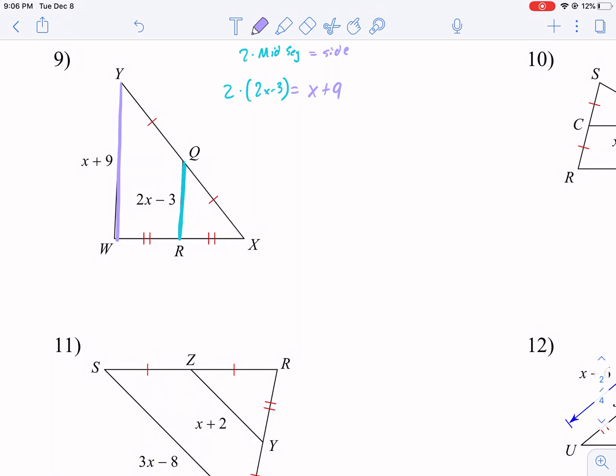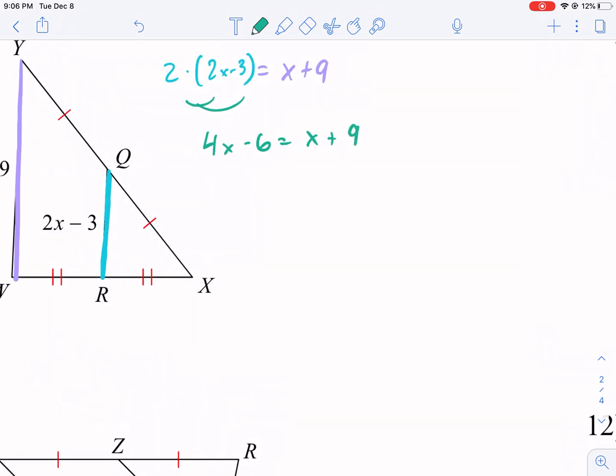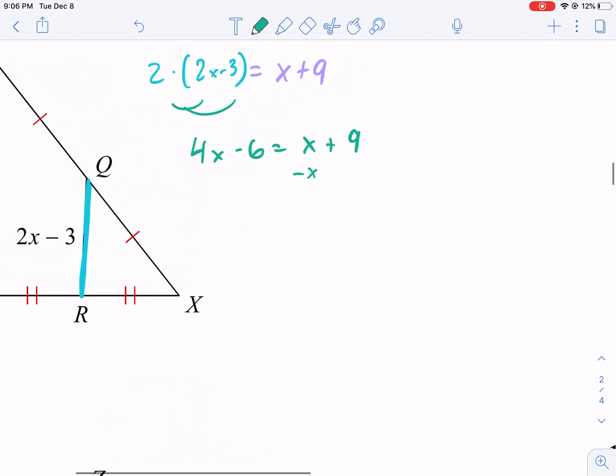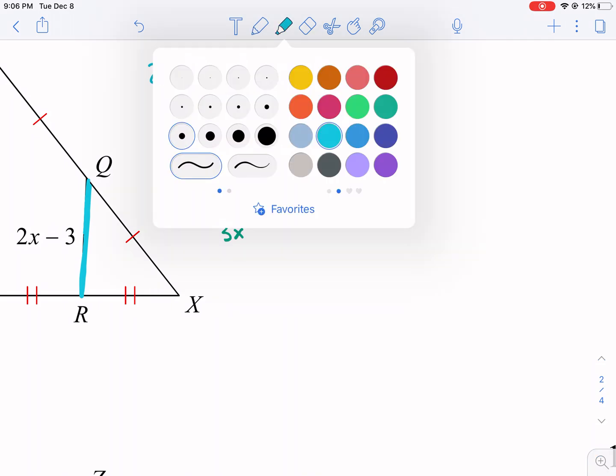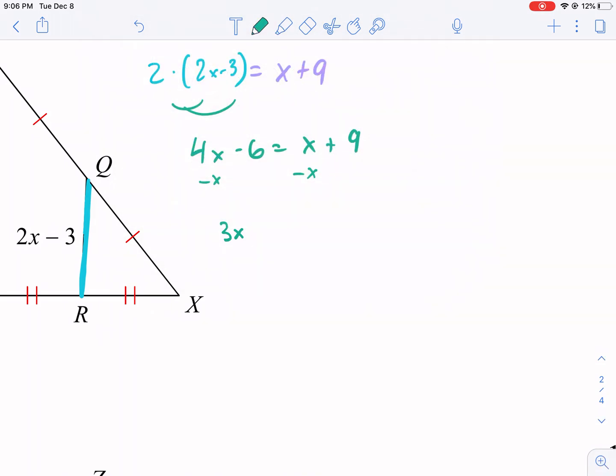So I'm going to use green to solve. We're going to distribute to both. We get 4x minus 6 equals x plus 9. We're going to have x on both sides. This is some good algebra practice here. We subtract x from both sides. We get 3x. Always start with your variables first. When it's on both sides, start with your variables first and move the smaller. That's my advice. Minus 6 equals 9.